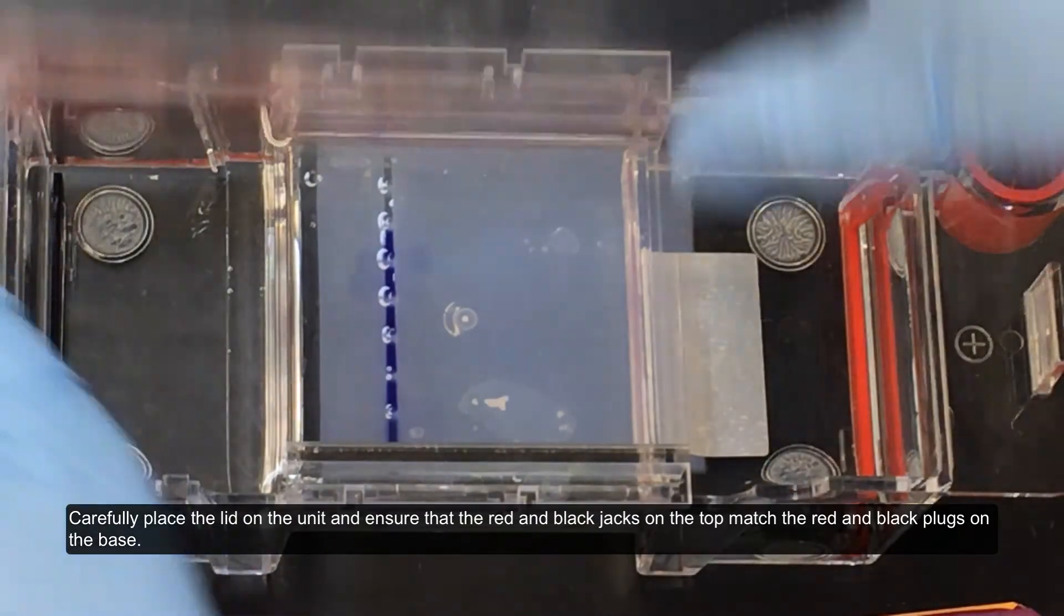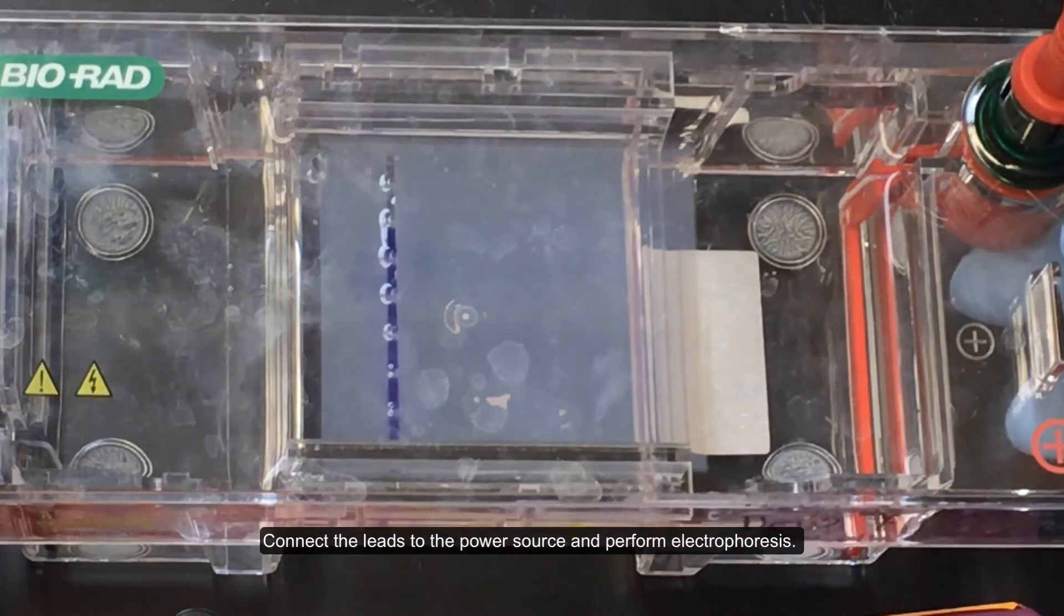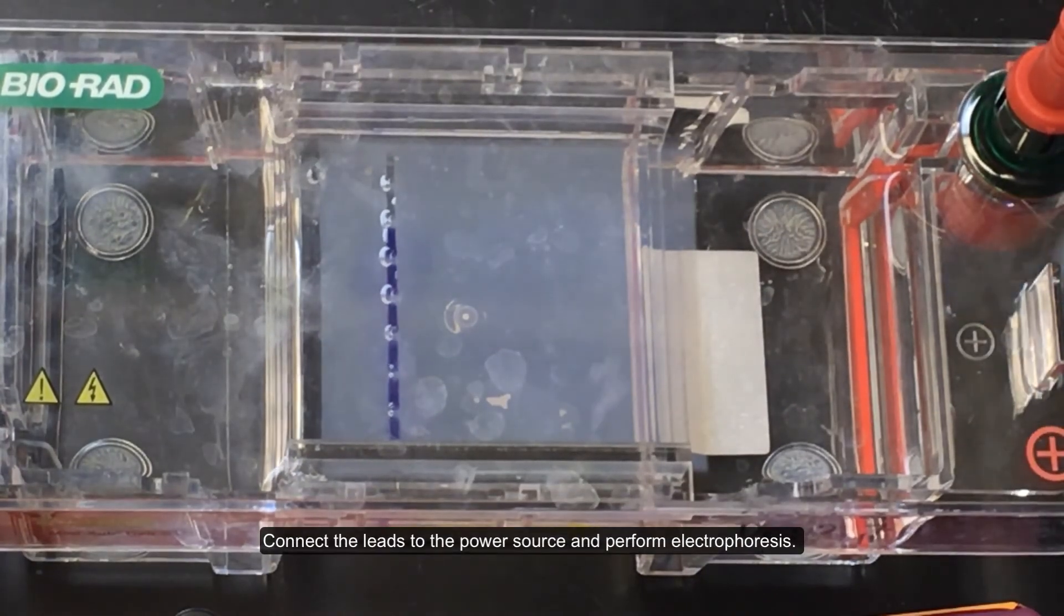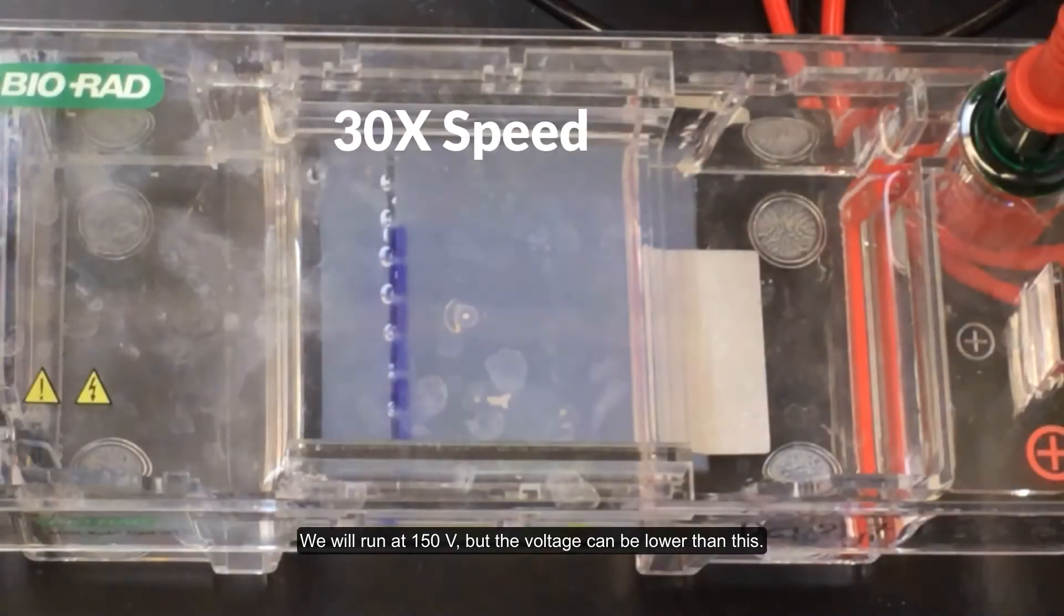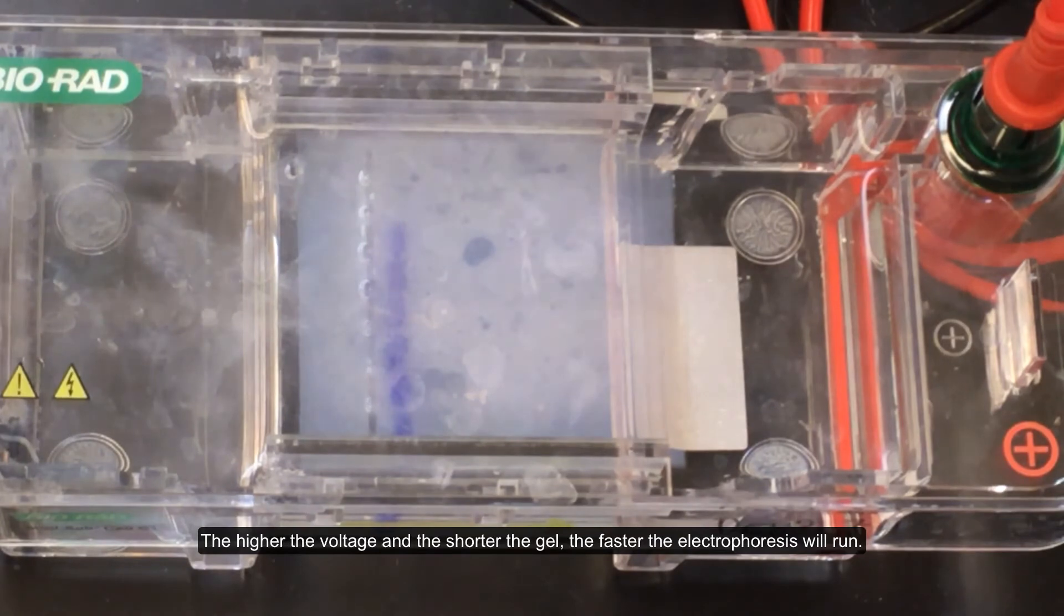Carefully place the lid on the unit and ensure that the red and black jacks on the top match the red and black plugs on the base. Connect the leads to the power source and perform electrophoresis. We will run at 150 volts, but the voltage can be lower than this. The higher the voltage and the shorter the gel, the faster the electrophoresis will run.